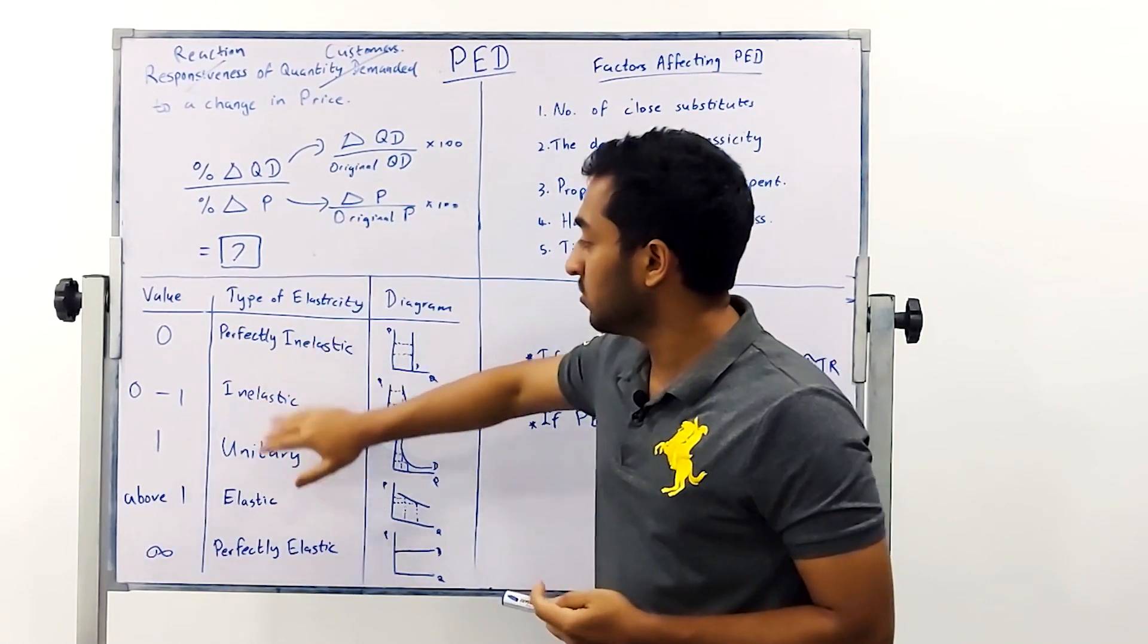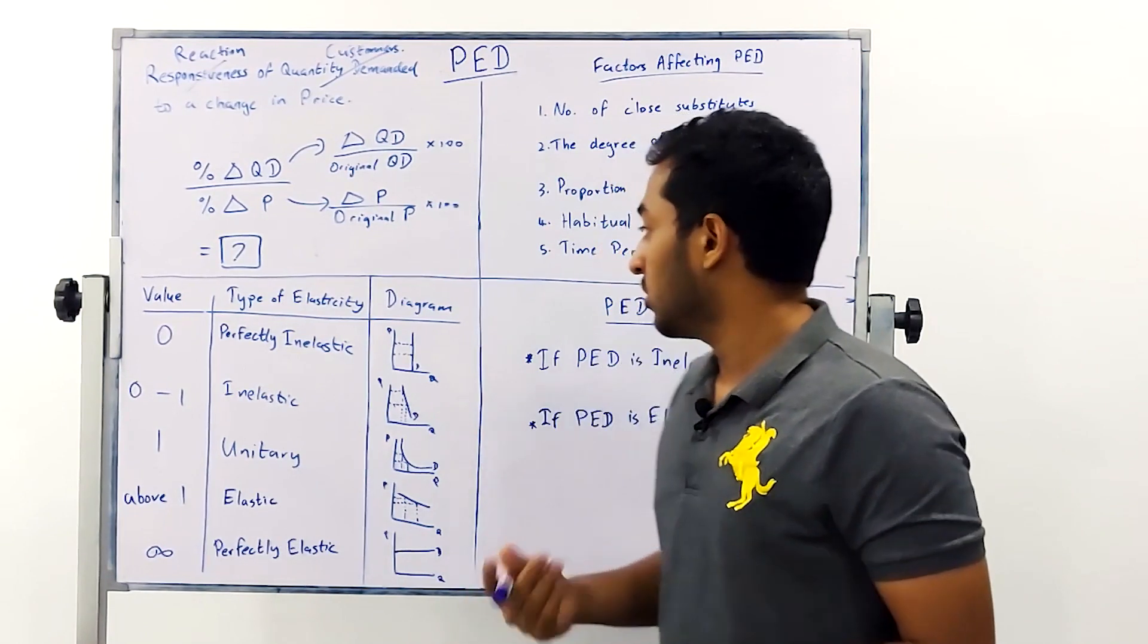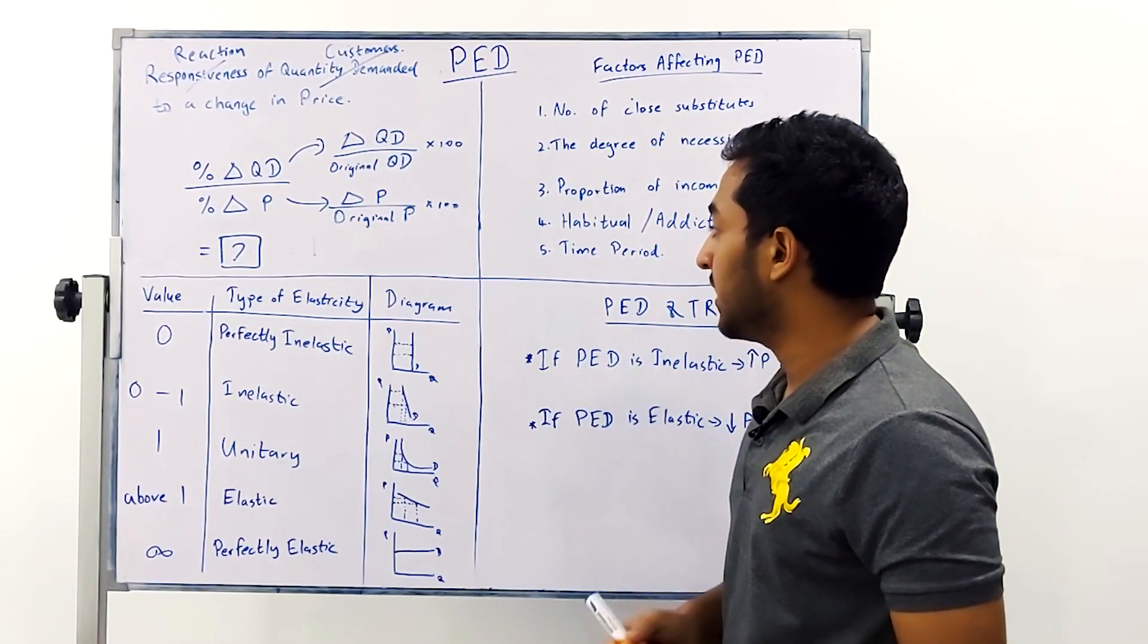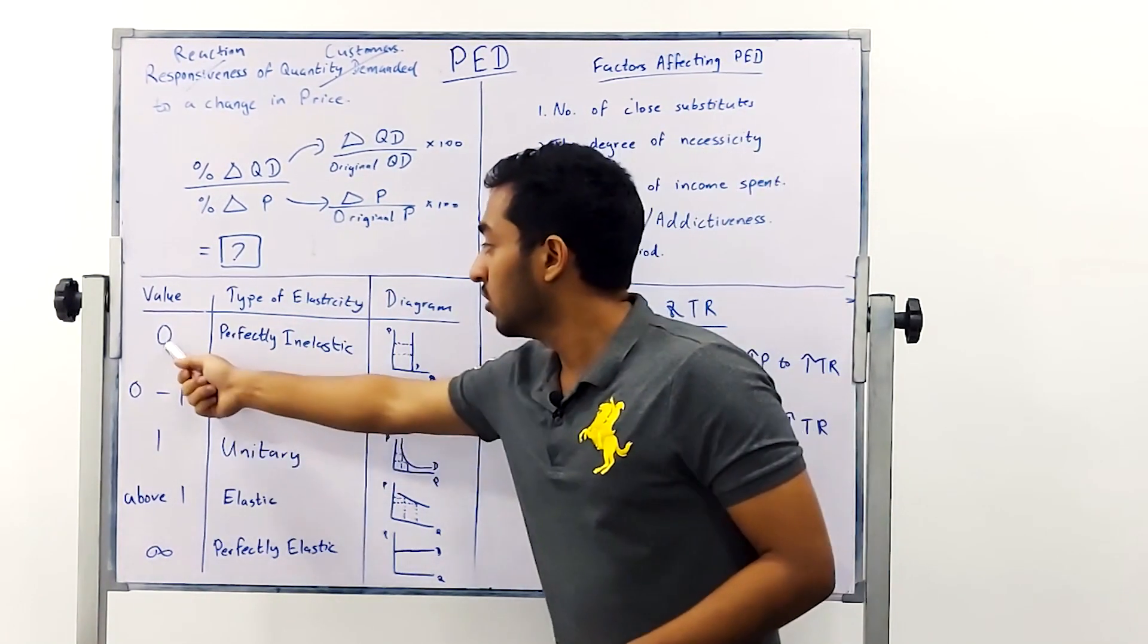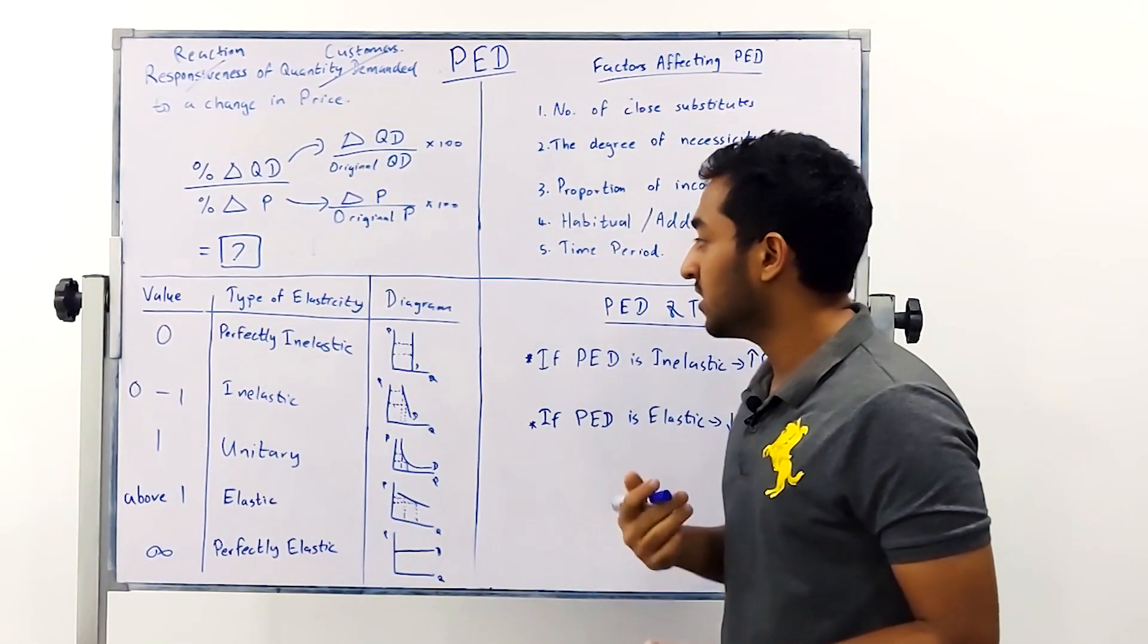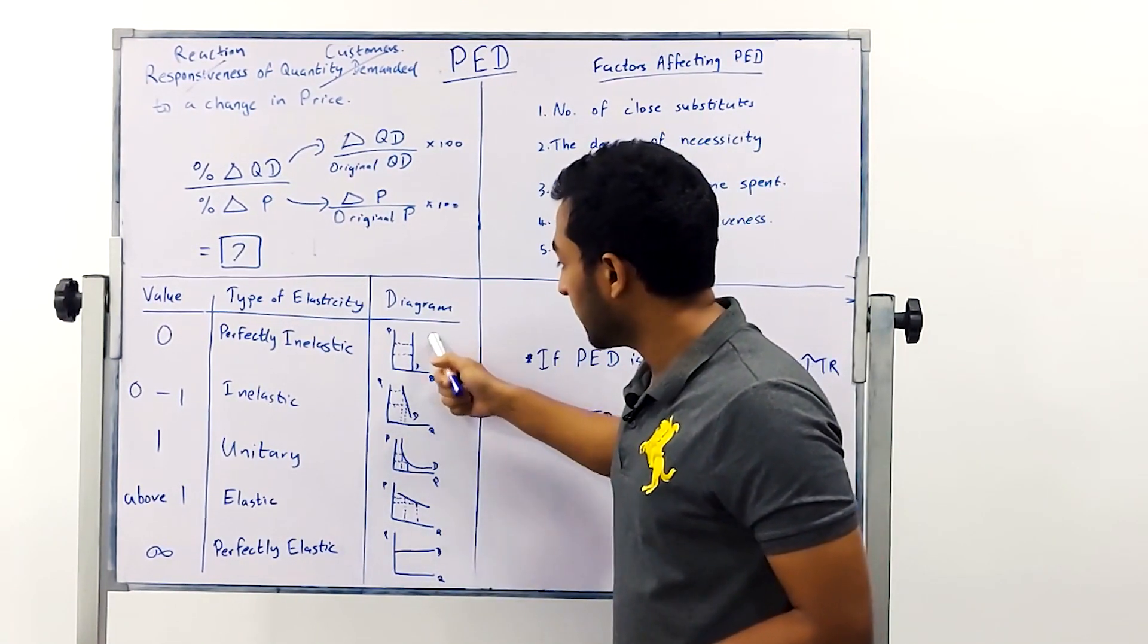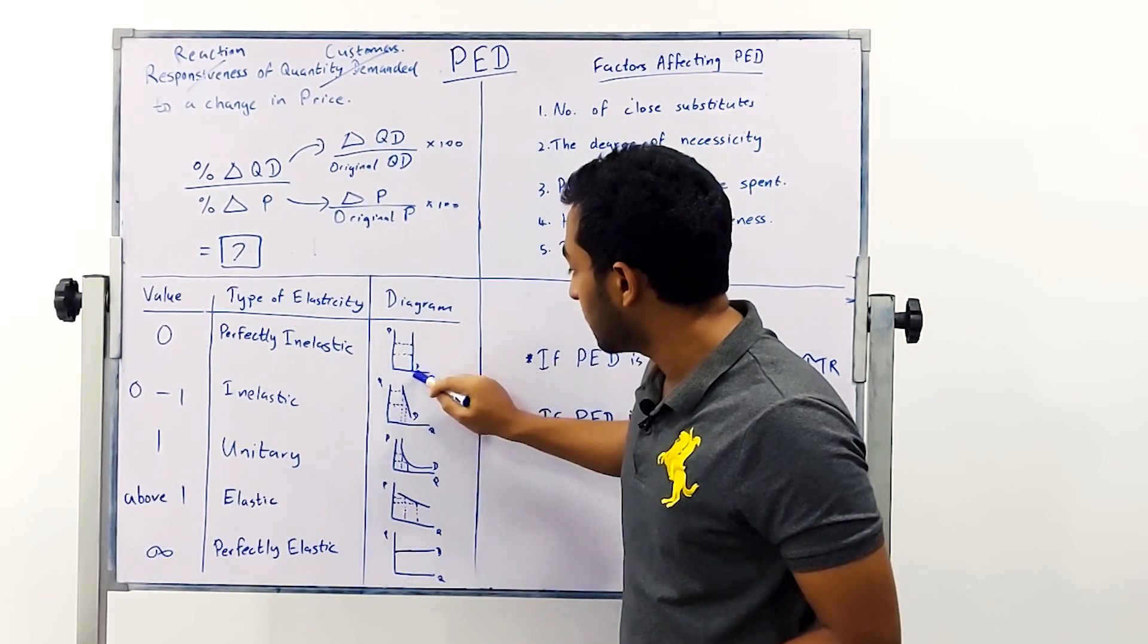Now we're going to analyze this in the next section where we have values in between zero and infinity. If your PED value is zero it indicates that if the price changes by one percent zero customers leave you which means you are perfectly inelastic. This is a theoretical concept and may not apply in real life. The diagram will look like this so if you see the price axis no matter what the price changes zero quantity demanded changes, zero customers leave you.